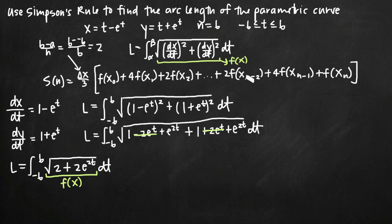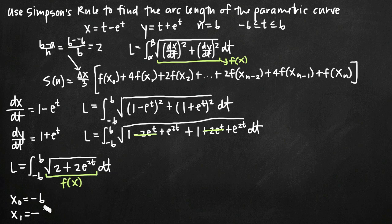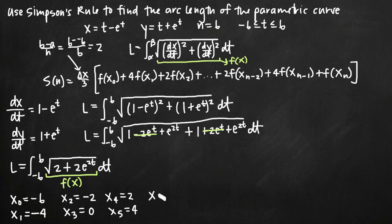Now we need to find x sub 0, x sub 1, x sub 2, etc. Our lower limit of integration, negative 6, is x sub 0. Then we keep adding delta x of 2 until we reach the upper limit. So x sub 1 is negative 4, x sub 2 is negative 2, x sub 3 is 0, x sub 4 is positive 2, x sub 5 is 4, and x sub 6 is 6 — our upper limit. Notice x sub 6 corresponds to n equals 6 as given.